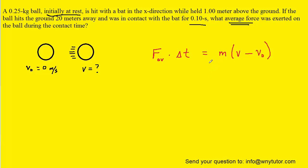We have several of these values. The time interval delta t is given to us as 0.10 seconds. The mass of the ball is given as 0.25 kilograms. The initial velocity is 0 meters per second, as noted. But what we're missing is the final velocity. Without that value, we're not going to be able to calculate the average force, so the question now becomes trying to find this final velocity.